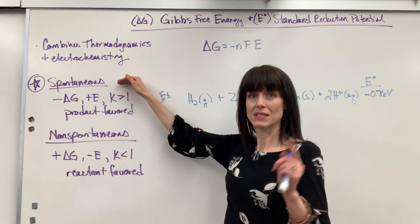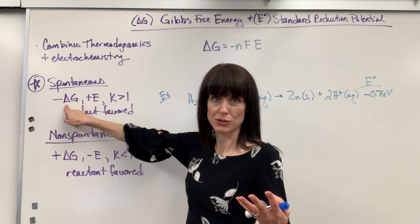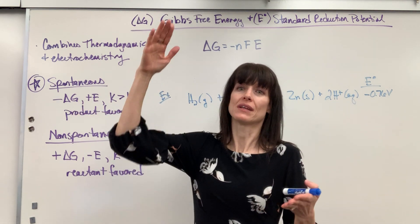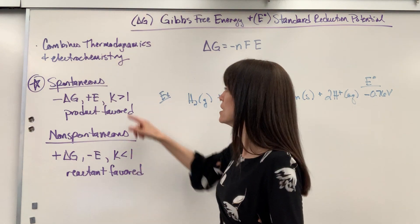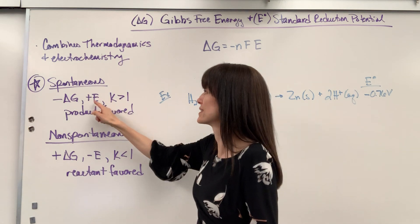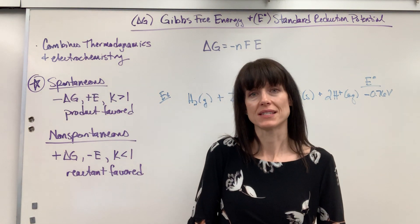A system is going to be spontaneous when delta G is negative, energy available to do work, the potential is positive because that will move electrons by itself without outside intervention when K is greater than 1 and its product favored. If you just know the sign of E you can predict everything else on that system.